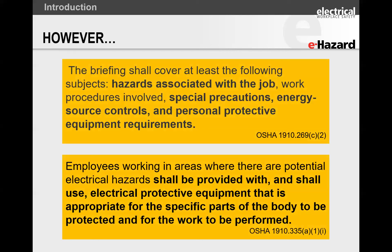If you look at 1910.269, what they're saying is that you need to do a job briefing, and your job briefing has to basically keep people safe. What they are asking you to do is essentially what I ran through in the table of contents: hazard identification, risk analysis, and how you are controlling the risk. So indirectly, OSHA is asking you to do it if you are power generation, transmission, and distribution.